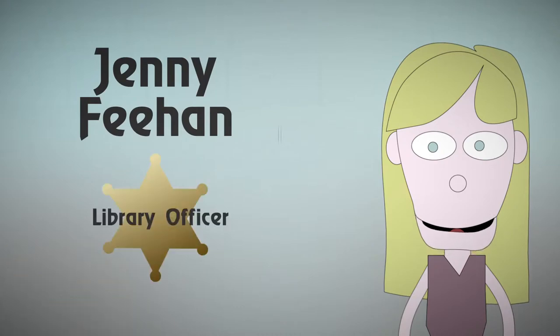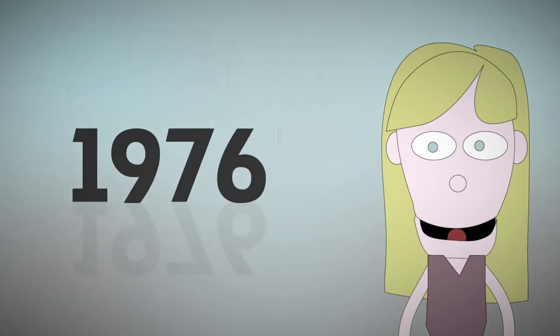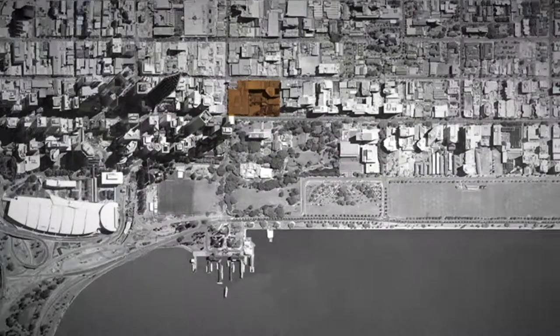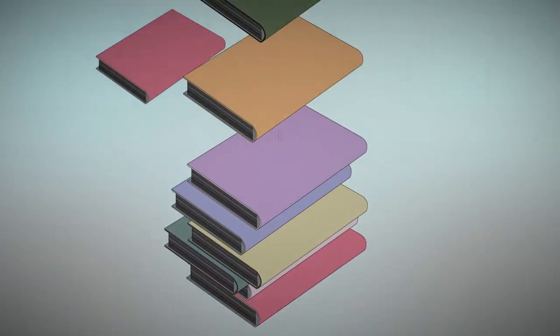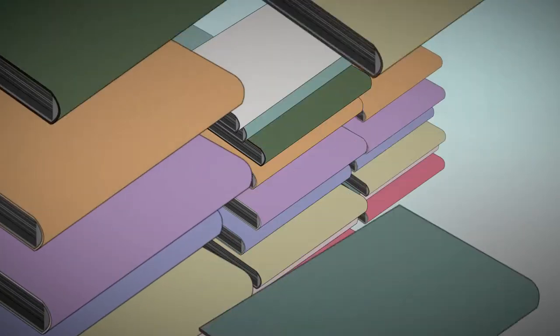I'm Jenny Feehan and I work as a Library Officer. I began in 1976 at the Circulation Division in Peer Street. It was extremely busy with a supply of stock to and from the public libraries.